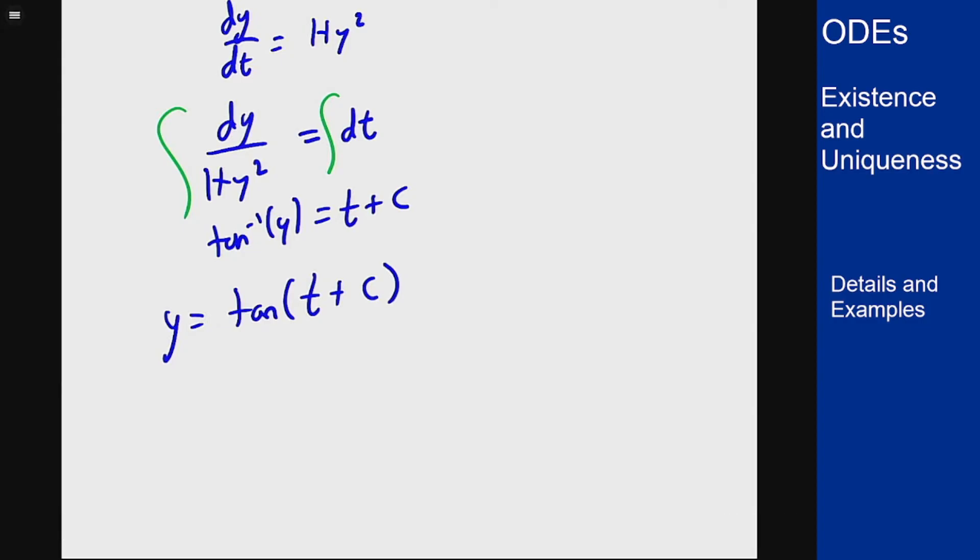Now one thing you will notice: the tangent function is not defined everywhere and has discontinuities. The tangent function stops existing at π/2, -π/2, 3π/2, -3π/2, or π/2 + nπ. But now what does that mean for our solution? Well, that's going to depend on our initial condition.